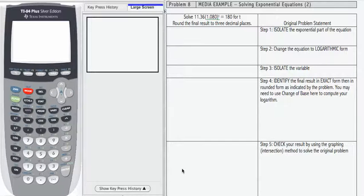In media example 8, we're going to work with a slightly more complicated problem than we did in media example 7. We're going to see just how important it is to keep track of your values and not to round intermediately.